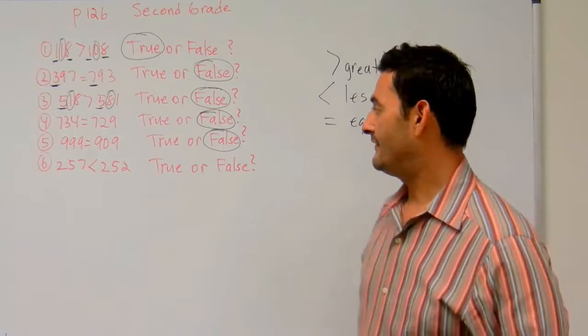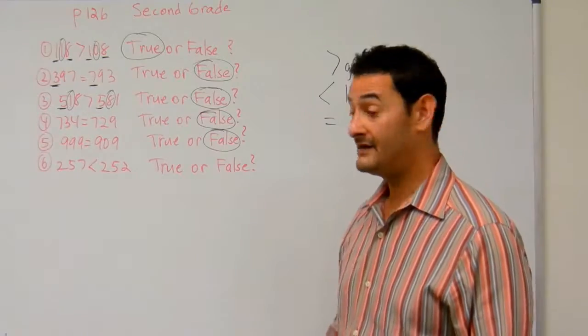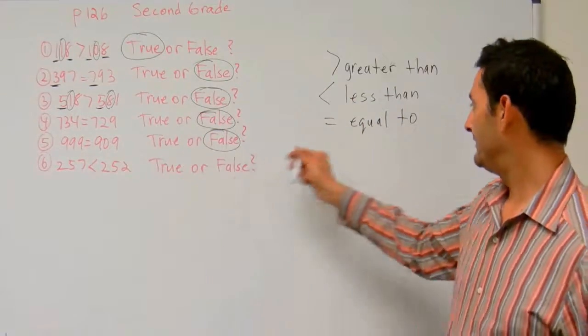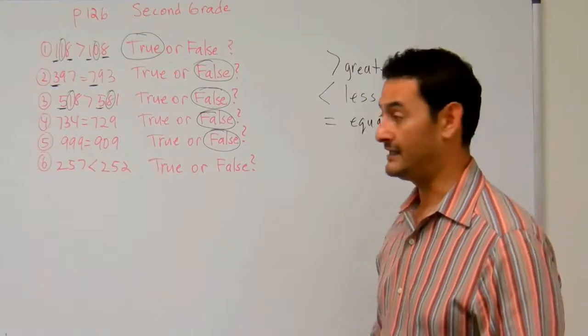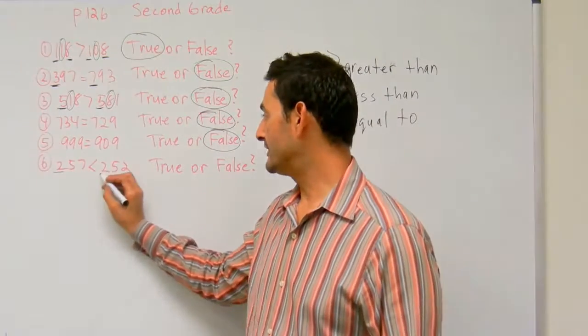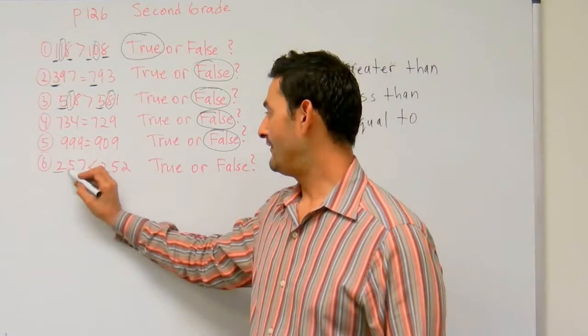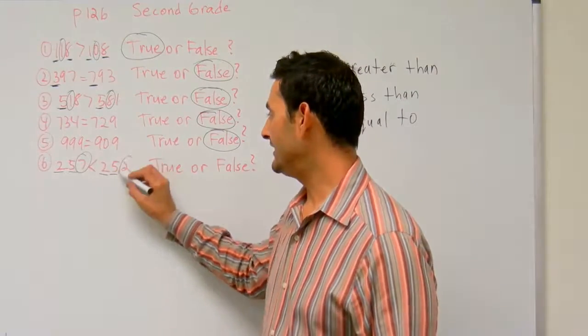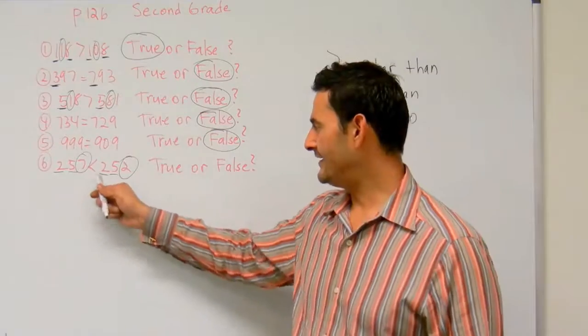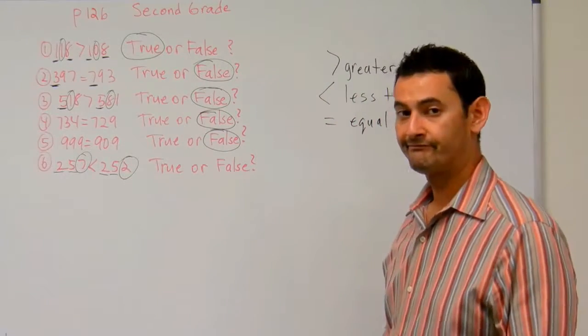Number six. We have 257 is, pointing that way, less than 252. Well, let's see. We have a two in the hundreds place. That's the same. We have a five in the tens place. That's the same. Here we have a seven. Here we have a two. Is seven less than two? No way.